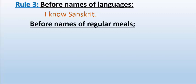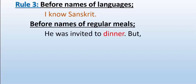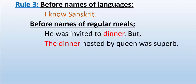Before names of regular meals — dinner, breakfast, lunch — if these nouns are used in a general sense, do not use article. For example, 'He was invited to dinner' — dinner here is in a general sense. But 'The dinner hosted by the queen was superb' — here we use 'the' because it refers to a particular, special dinner hosted by the queen. When referring to a particular meal, article is used; in a general sense, it is not.